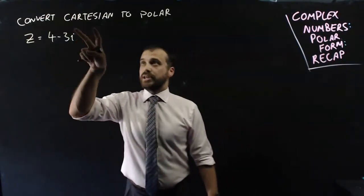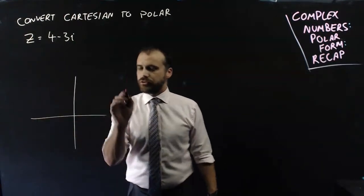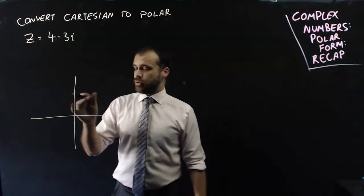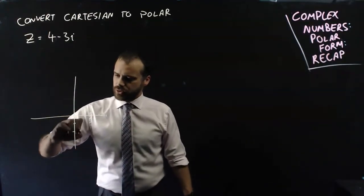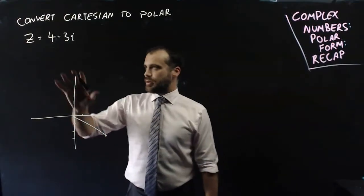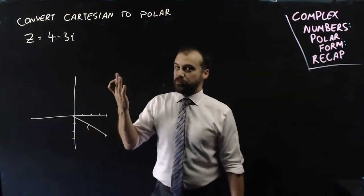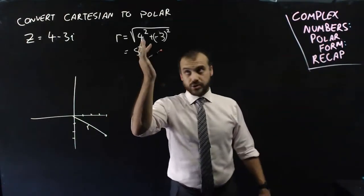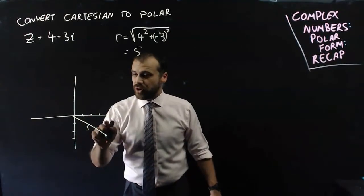So a quick example here, we're going to convert Cartesian form to polar form. z equals 4 minus 3i. If I drew it on a Cartesian plane, or an Argand diagram, it would look like 1, 2, 3, 4, 1, 2, 3, down here somewhere. Now, I can find the r value because I know Pythagoras' theorem. The square root of 4 squared plus negative 3 squared is equal to 5, so that r value is 5.